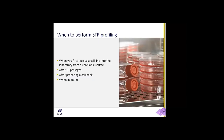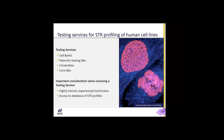So when should you perform STR profiling? When you first receive a cell line into the laboratory from an unreliable source, after 10 passages, after preparing a new cell bank, and whenever in doubt. Testing services for STR profiling of human cells include ATCC and other cell banks, paternity testing laboratories, universities, and core labs. Most importantly, when choosing a testing service, consider that technicians are highly trained and experienced — especially in the interpretation of the data — and that there is access to a database of STR profiles of human cell lines.